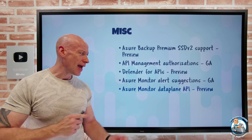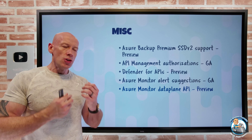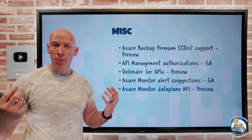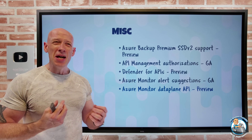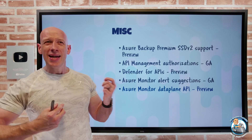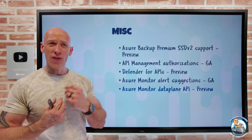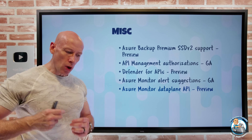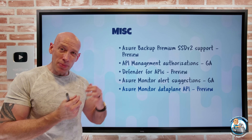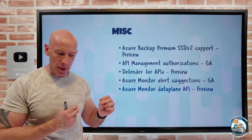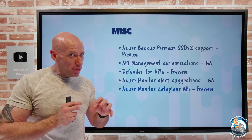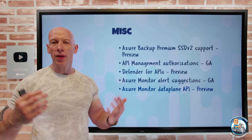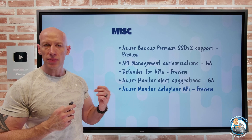Also for Azure Monitor, we now have a Data Plane API in preview. Ordinarily, if I want to fetch some metrics I use the ARM API — Azure Resource Manager — but that has certain throttling giving me limits on what I can fetch. With this new Data Plane API specifically for Azure Monitor, I can retrieve metric data for up to 50 resources in a single batch API call. They have to be in the same region and the same subscription, but it really helps remove a lot of the throttling I'd face with the ARM API.